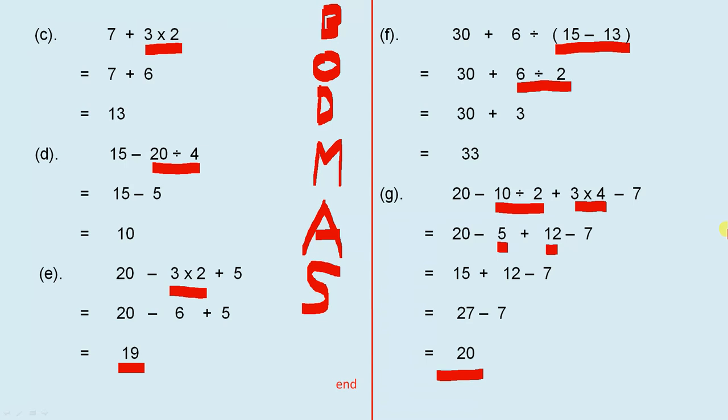So this video has given us a simple rule, outlined by the acronym BODMAS, which helps us to work out the order of operations. You do your brackets first. Any division or multiplication, followed by addition and subtraction from left to right.